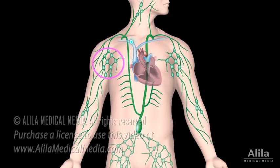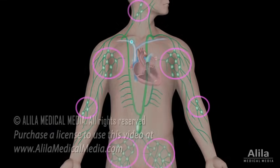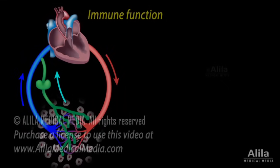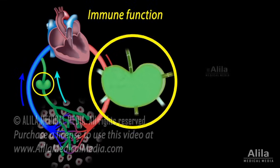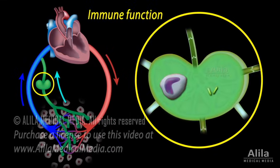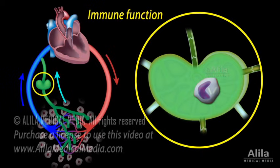Lymph nodes are small, bean-shaped structures scattered throughout the lymphatic network. They are most prominent in the areas where the vessels converge. Lymph nodes contain macrophages and dendritic cells that directly swallow up any pathogens, such as bacteria or viruses, that may have been taken up from an infected tissue.